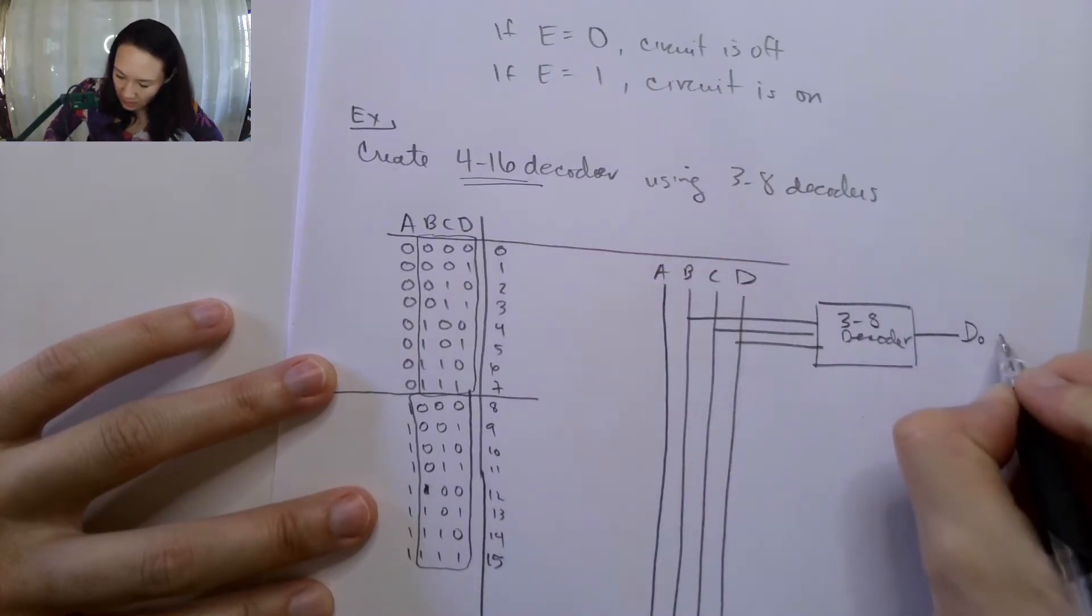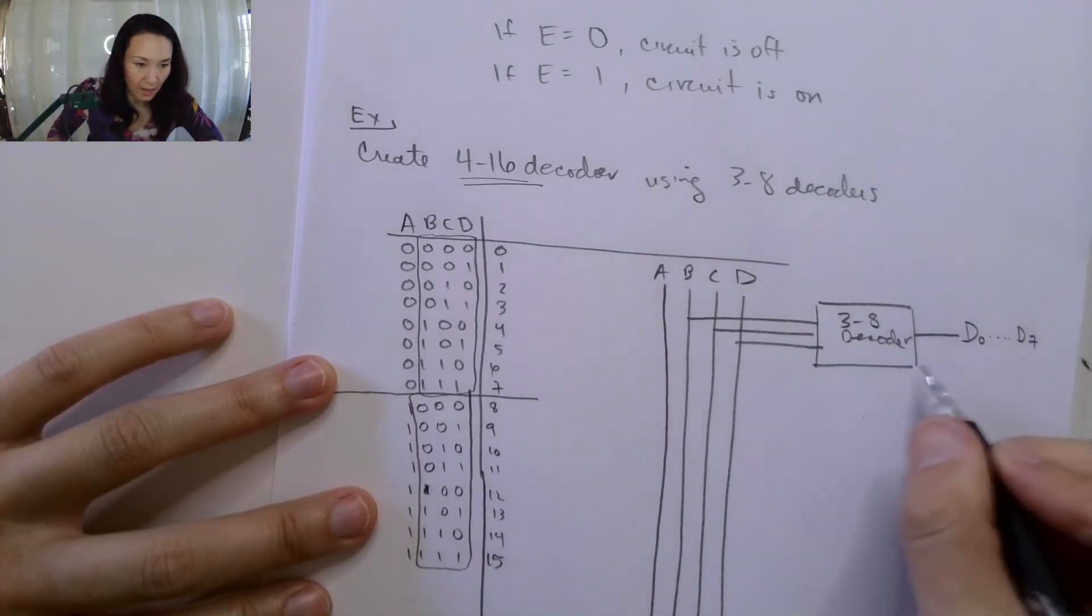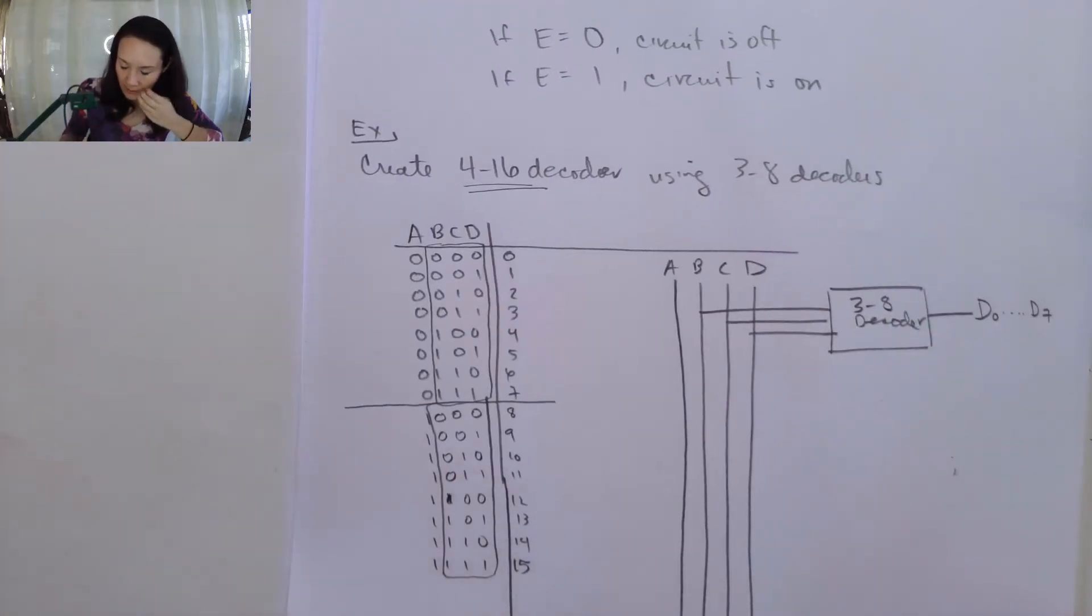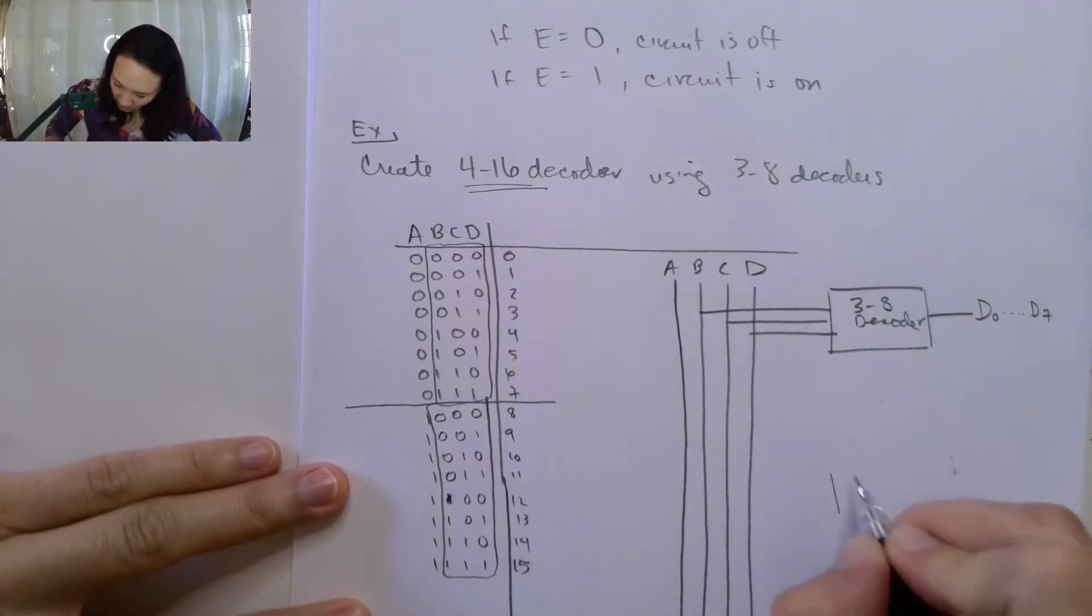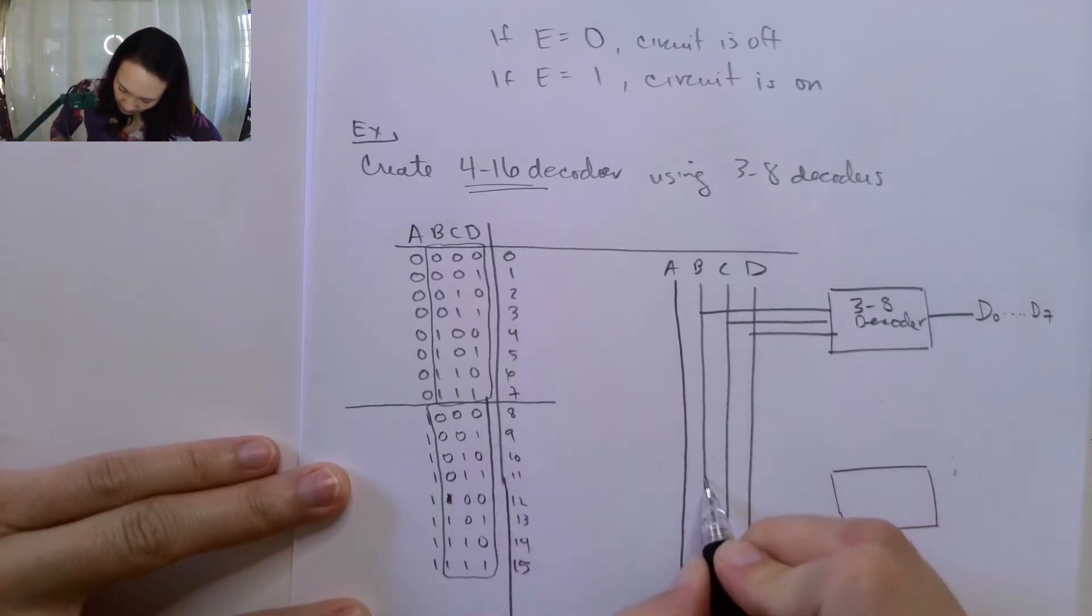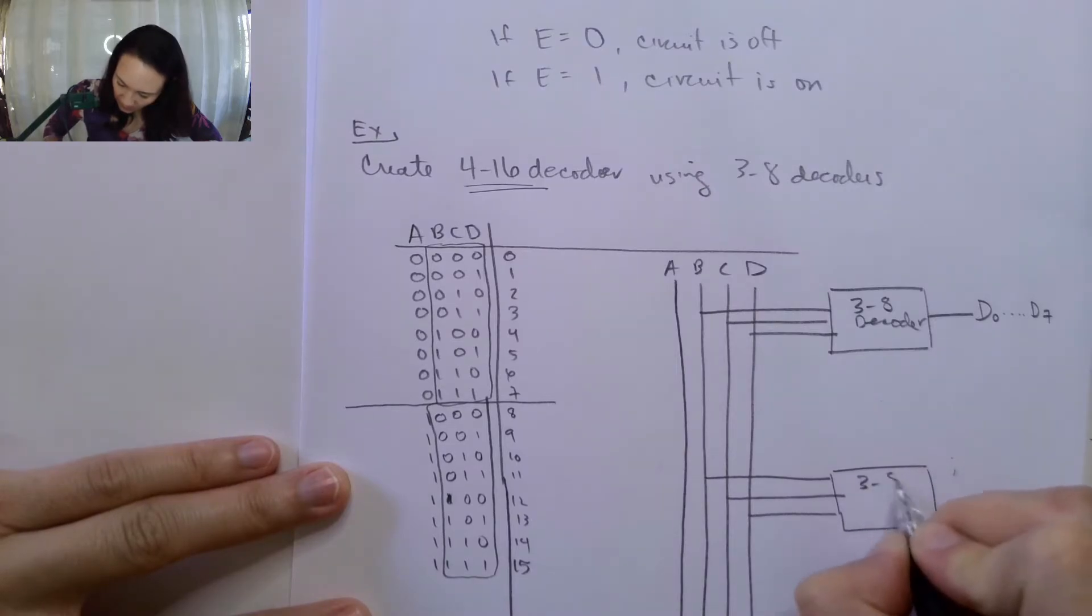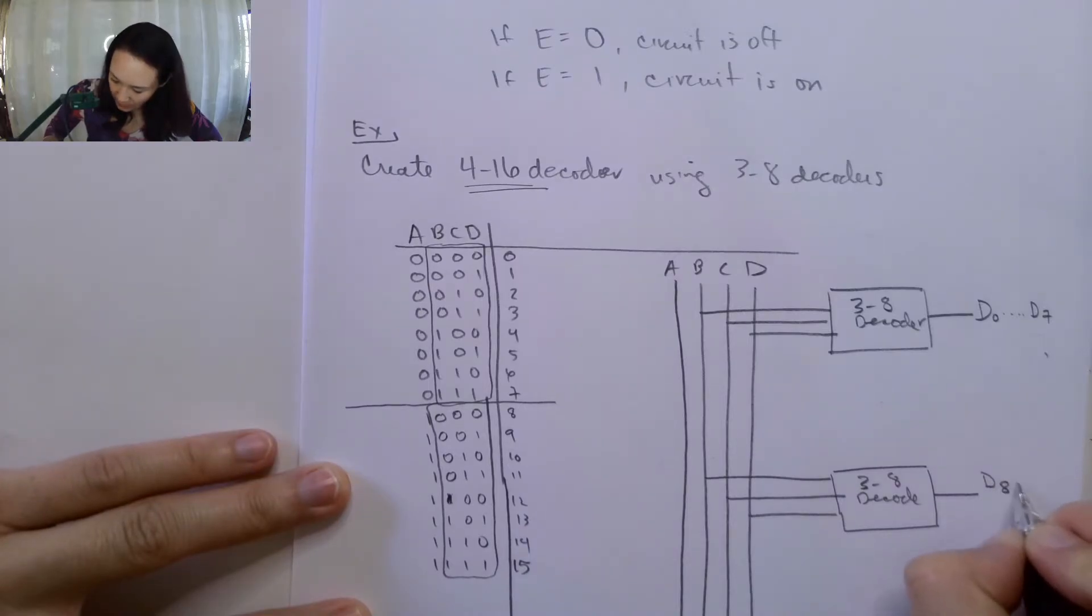I'll just make a shorthand D0 to D7 rather than write all 8 output bits. So I'm going to have a second decoder, and this is also going to take in the same inputs B, C, D. This is a 3-to-8-bit decoder, but I want this one to output my decimal digits 8 to decimal 15.